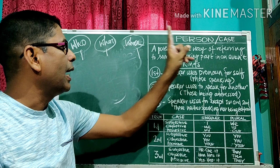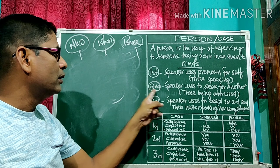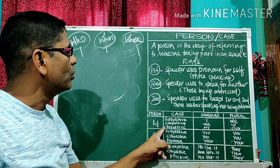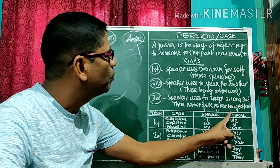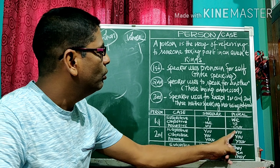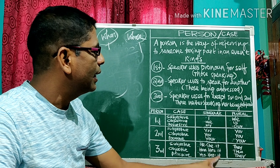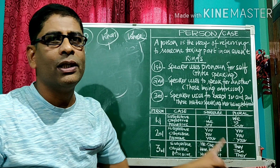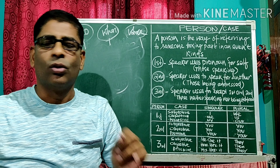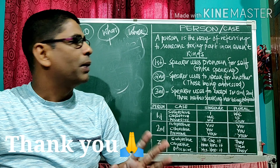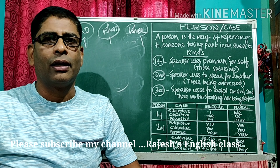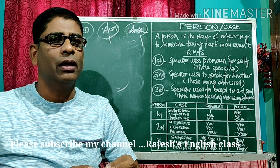This is all about person and case. There are three persons — first, second, and third — and three cases — subjective, objective, and possessive — each with singular and plural forms. This applies only to pronouns. Please subscribe to Rajesh's English class channel and you will get many more lessons in the coming days. Thank you.